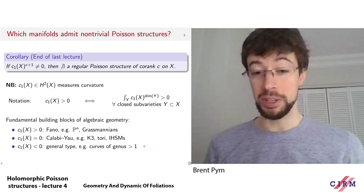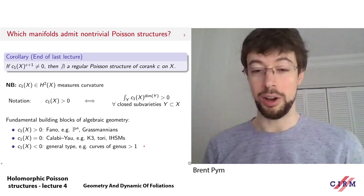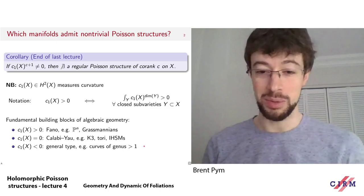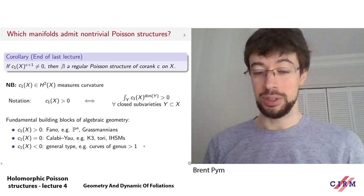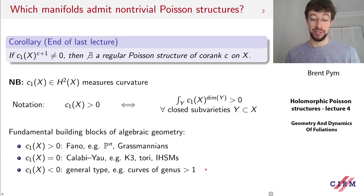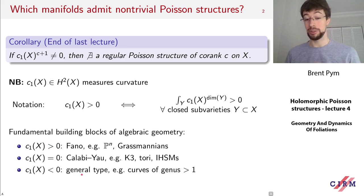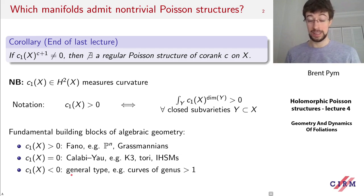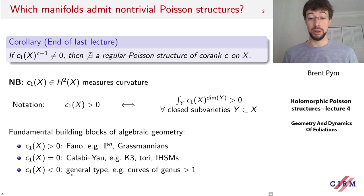These are the fundamental building blocks from which all algebraic varieties are expected to be built. A typical algebraic variety will not have a definite sign for its curvature — for instance, a product of a Fano variety and a general type variety has mixed curvature. But in any case, this motivates looking at the geometry of Poisson structures on each of these types of building blocks.